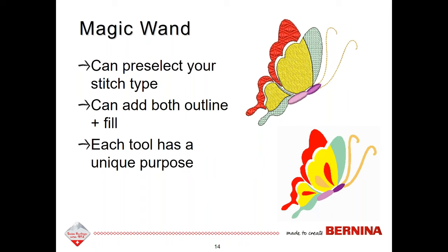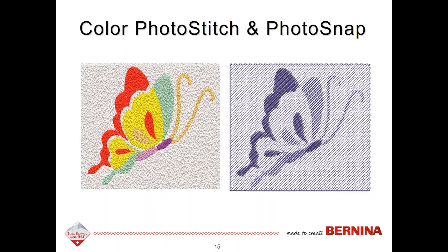The Magic Wand tool lets you pre-select your type of stitch, eliminating the step of going back to edit. You can add both an outline and fill at once. Each tool in the magic wand block has a different purpose: one adds satin stitches with multiple angles, another adds a single outline in the middle of an object. Left-clicking adds fill stitches; right-clicking adds an outline. Photo Snap gives a tapestry-looking effect in all one color, while Color Photo Stitch gives multiple colors.